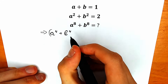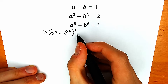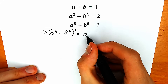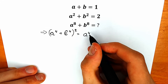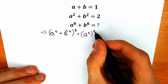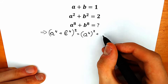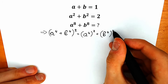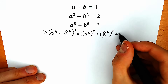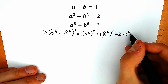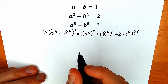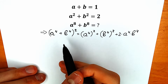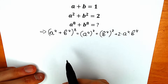The first step: let's raise a to the fourth plus b to the fourth to the second power. According to the basic school formula, we have a to the fourth squared, plus b to the fourth squared, plus 2 times a to the fourth times b to the fourth. We want to get closer to a to the power 8 plus b to the power 8.